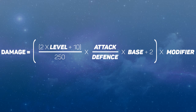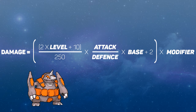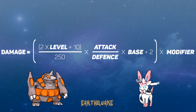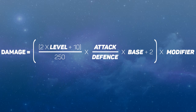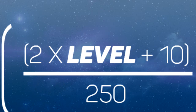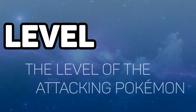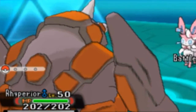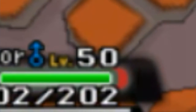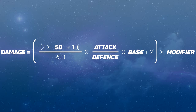So let's say we've got a Rhyperior — because of course, Rhyperior — using Earthquake against a Sylveon in a standard Wi-Fi battle, both Pokemon at level 50. So let's go for the first word: level. This is a pretty easy one, it's just the level of the attacking Pokemon. So 50 in our example — just this number right here. Let's plug that in the calculation and move on.